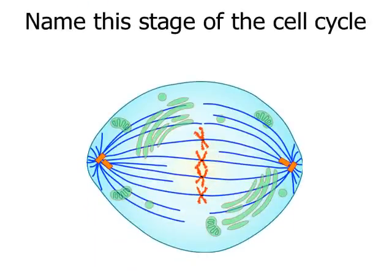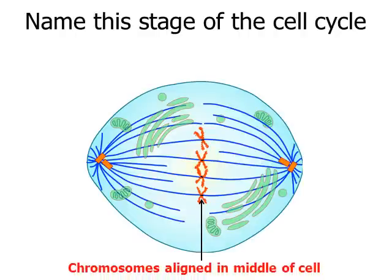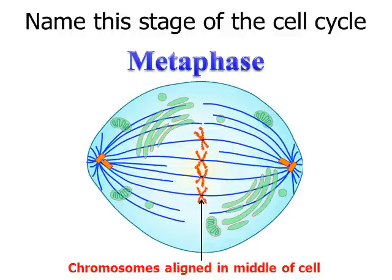Here's another one. Same thing — pause the video. Is this interphase, prophase, metaphase, anaphase, or telophase? The clue: you can see that the red X-shaped chromosomes are aligned in the middle of the cell. This is a picture that is characteristic of metaphase.